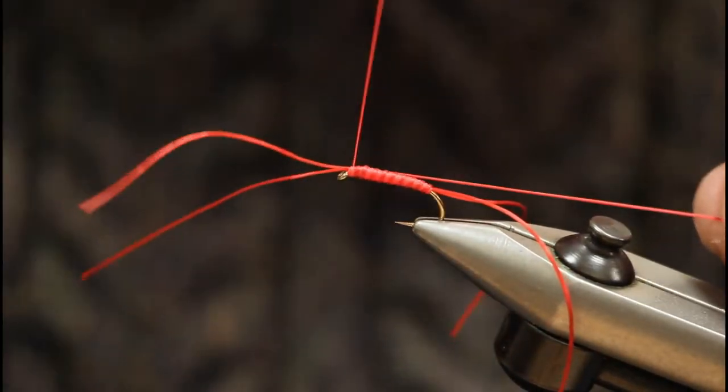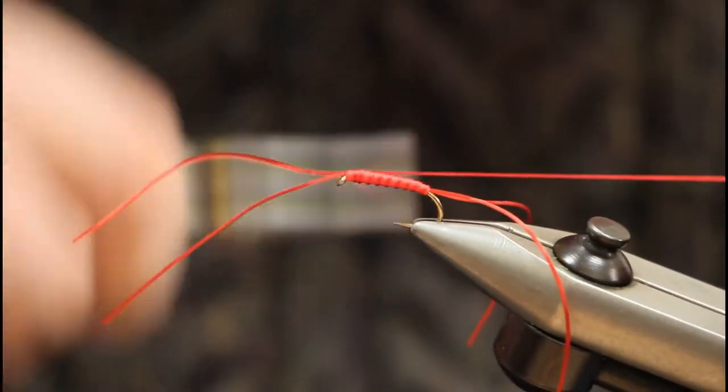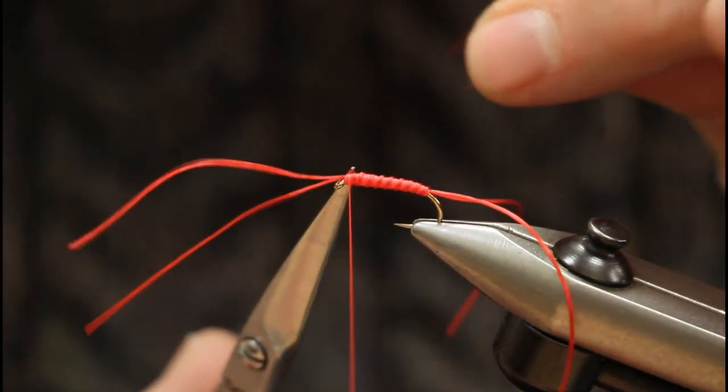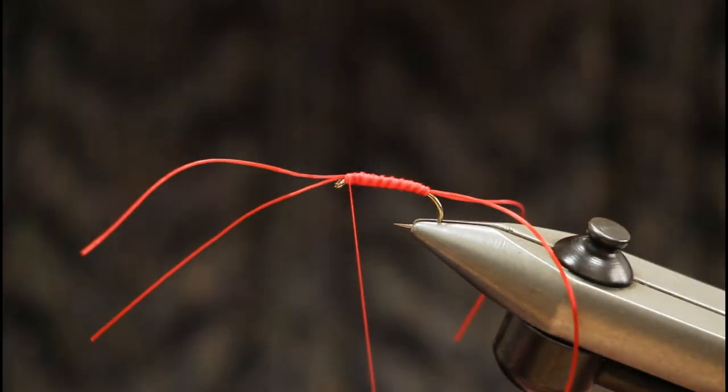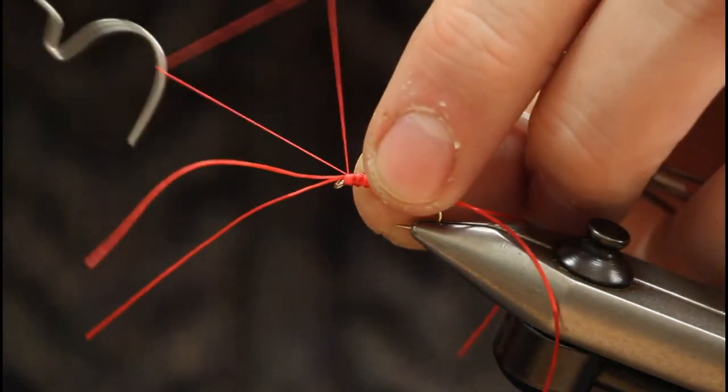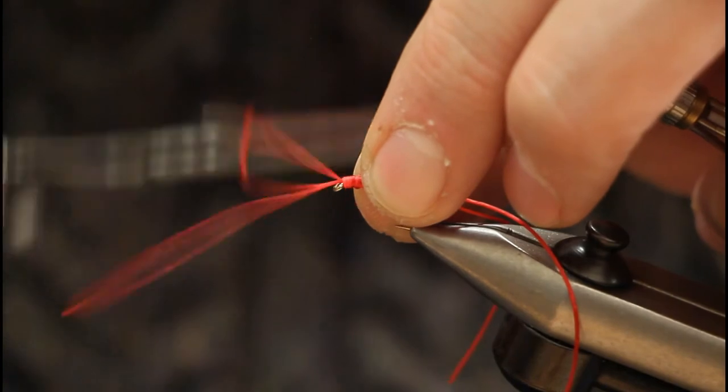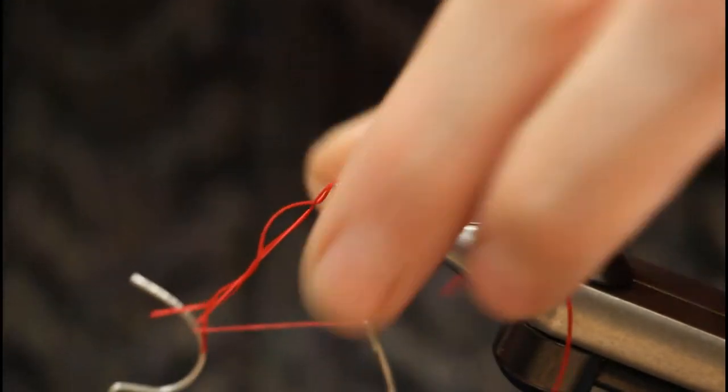Pull tight and just fold it back, then just remove your waste piece there. Just whip finish. It's slightly caught up in the front legs, but not too bad.